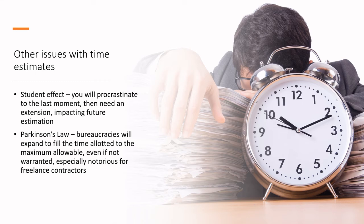You need to think carefully about dependent activities versus parallel activities. There are also well-described phenomena that affect time estimates. One is the Student Effect — you're given a two-week deadline, you wait until day 13 of 14, and suddenly realize there's more than one day's worth of work. The Student Effect means you procrastinate to the last moment, request an extension, and that extension causes a wait-and-queue effect on later activities.